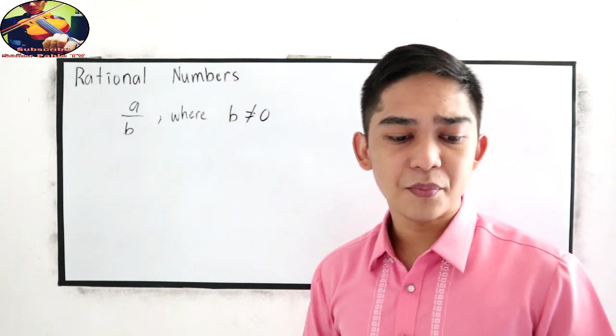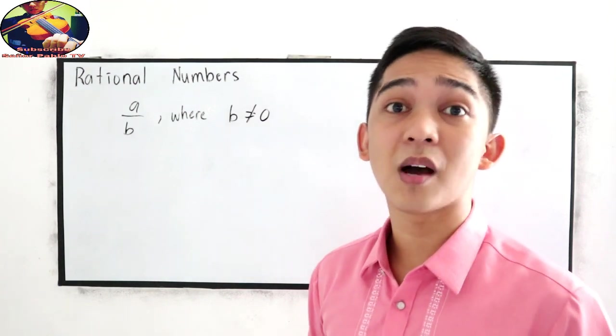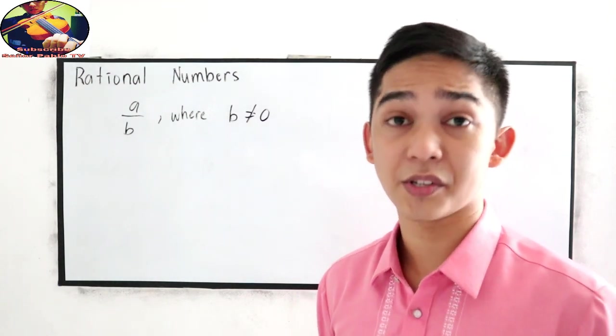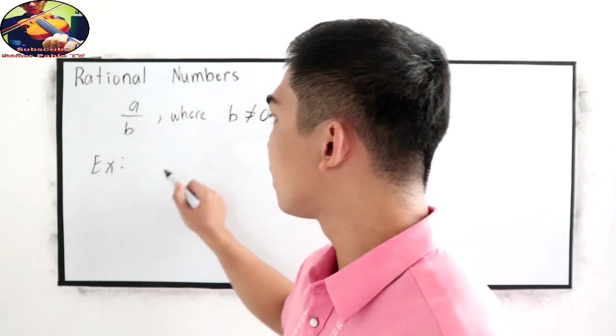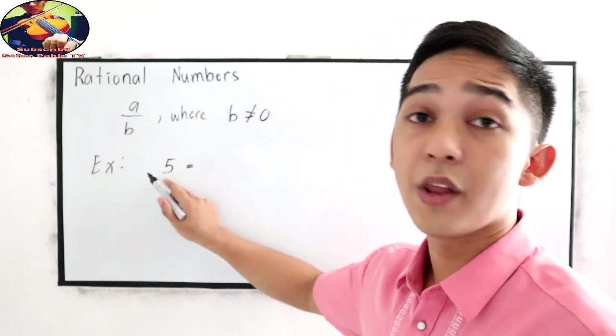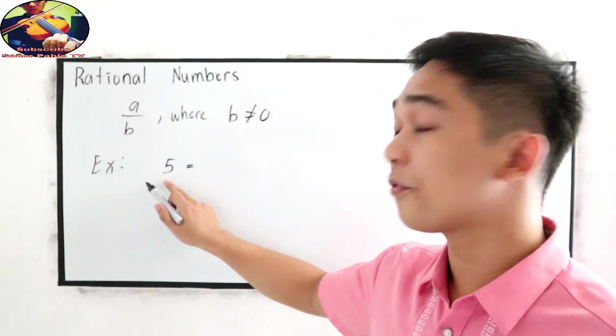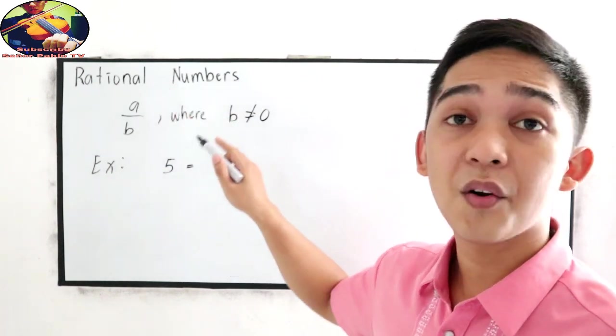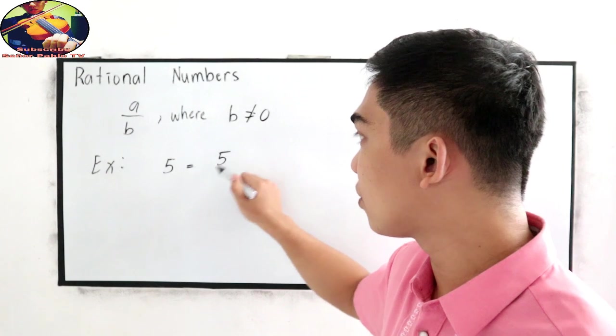Now, let us determine or have some examples of rational numbers. Examples are the number 5. We know that this is a whole number, but any whole number, just like 5, can be written as a rational number. That is equal to 5 over 1.